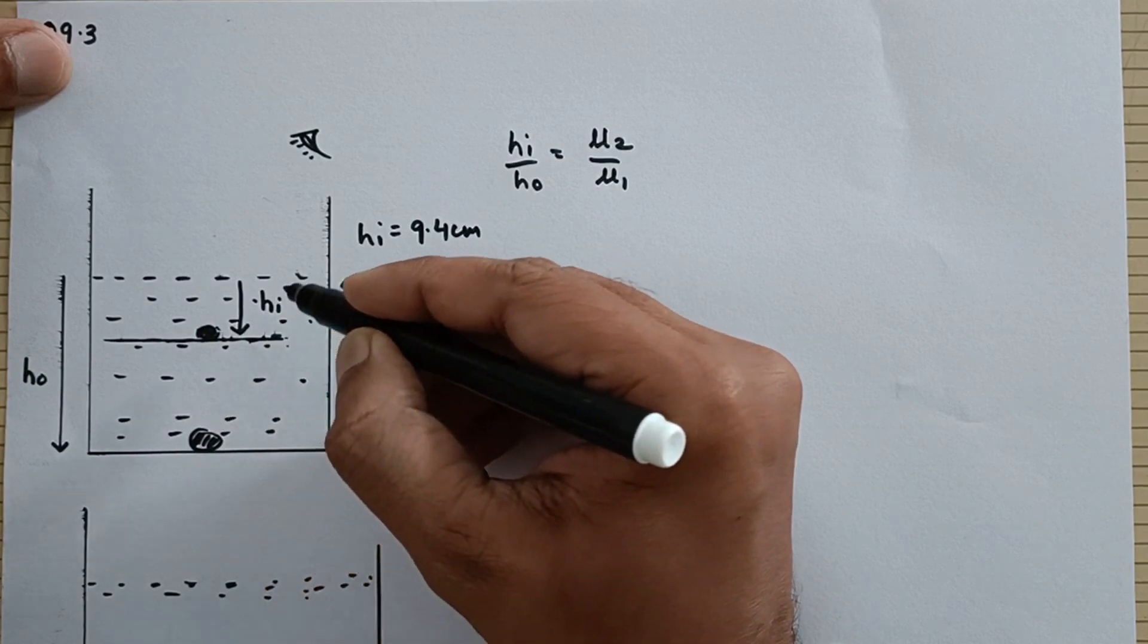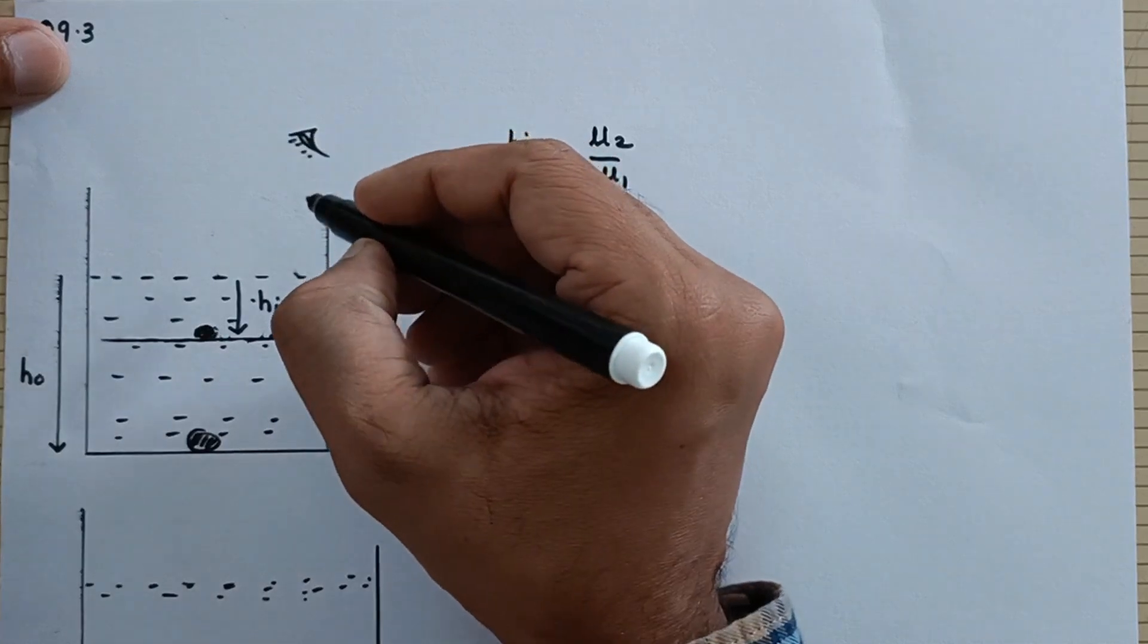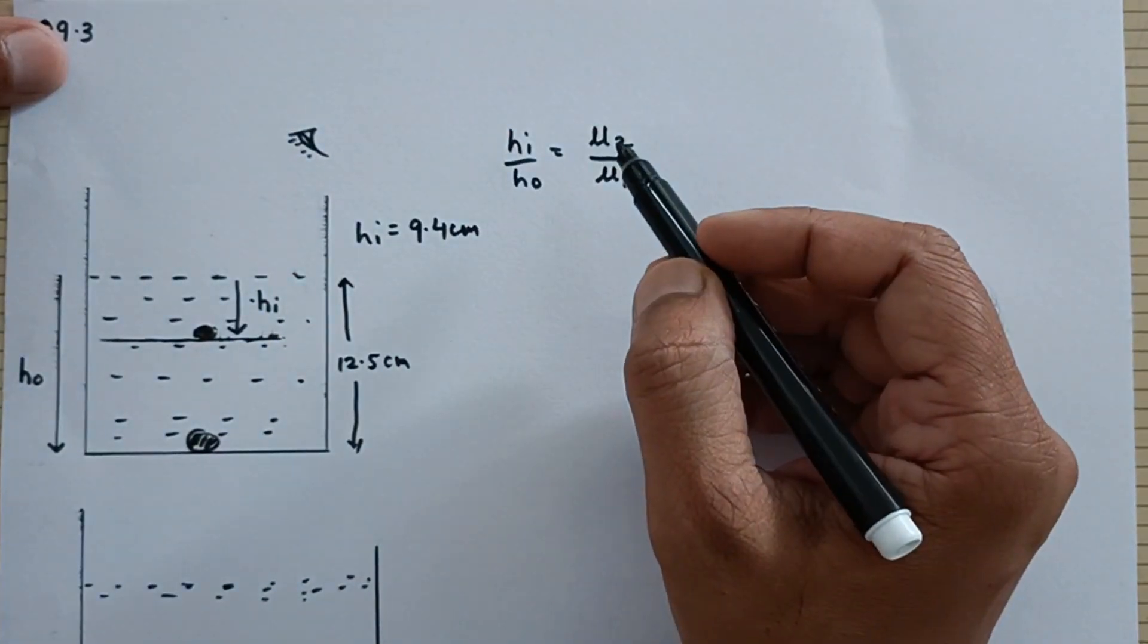Refractive index of medium 2 means where you have refracted ray. So the incident ray would be coming out of the object and then it would be going towards the eye of the observer. Wherever you have refracted ray that is air that medium would become medium number 2.